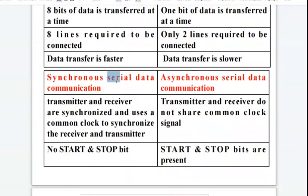There are two types of serial data communication. One is synchronous, another is asynchronous. In synchronous, the transmitter and receiver are synchronized and use a common clock to synchronize the receiver and transmitter.